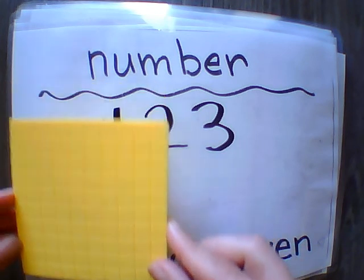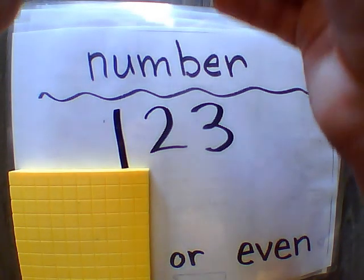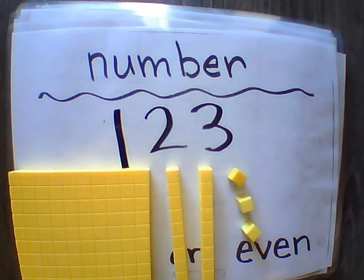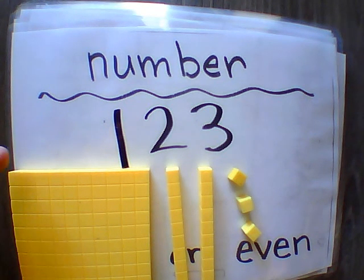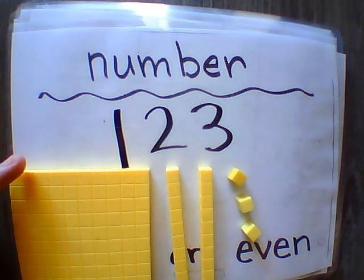We have our hundred — one group of hundreds, which is a hundred little cubes. Then we're going to get our tens. In each one of these there are ten little cubes, so we have ten, twenty. And then we need three cubes, three little ones. That's building with our longs, our hundred blocks, and our ones cubes.